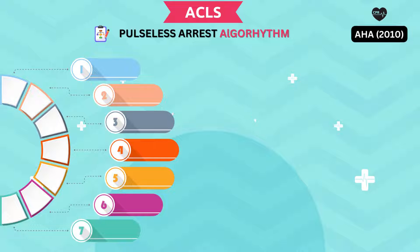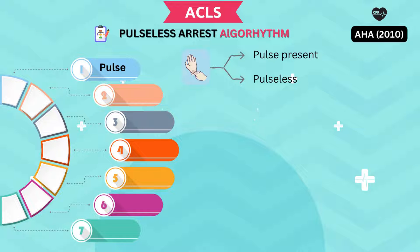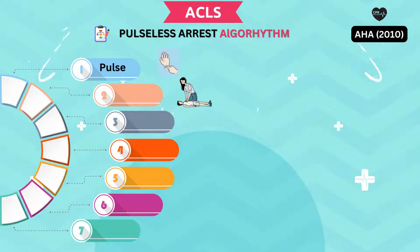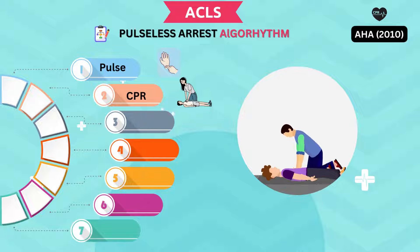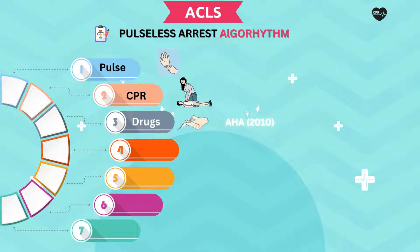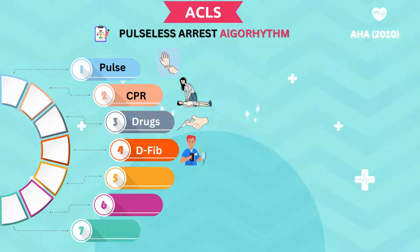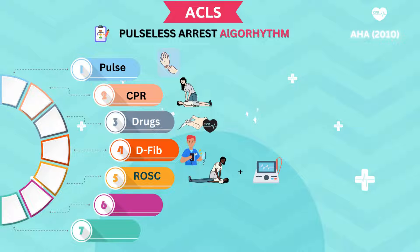The steps outlined by this algorithm include: Number 1, confirm whether or not pulselessness exists by checking for signs such as absent pulse or abnormal breathing patterns. Next, initiate chest compressions at a rate of 100 to 120 per minute. Then administer IV medications according to AHA guidelines. Next, perform manual defibrillation if indicated. Number 5, continue CPR with pauses for rhythm checks every 2 minutes until return of spontaneous circulation, or ROSC, is achieved or advanced airway management has been established.